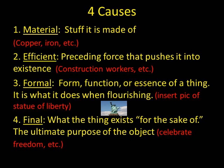Thinking about the four causes can also help us see why Aristotle would reject materialism. A blob of matter is not a thing until it has form — its pure potentiality or energy. A fish is not a fish because of its physical components, since different fish have different physical components. Rather, a fish is a fish because of its organization, its formal and final causes. So explaining what a thing is made of doesn't fully explain that thing — one must also speak of its form and function.